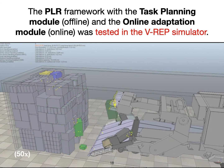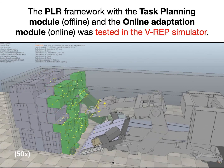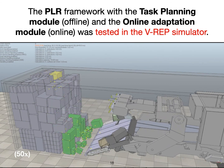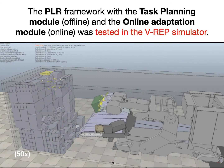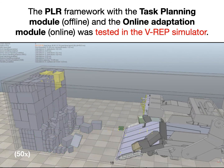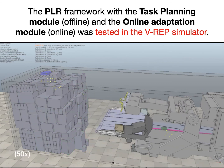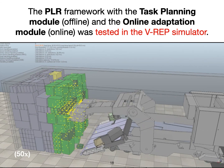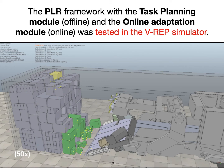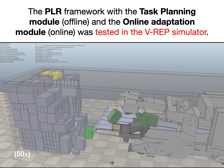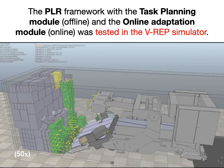Finally, we show our entire framework including the task planning, online adaptation, execution, and motion planning modules in simulation, unloading a trailer. The simulated run exhibits the efficacy of our framework to deal with a wide variety of box configurations and the robustness of the planned strategies. Note that the execution and motion planning modules have also been tested on the real robot. We leave testing the task planning and online adaptation modules on the real robot for future work.